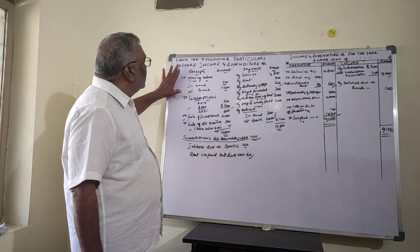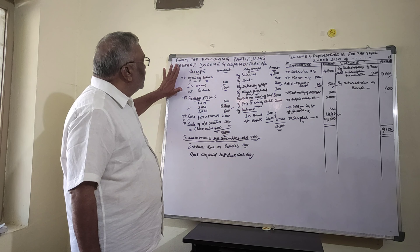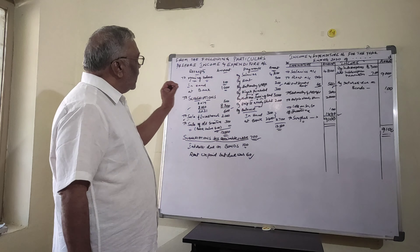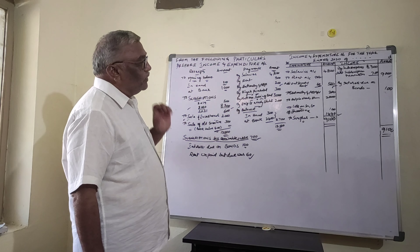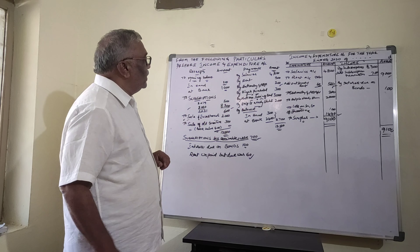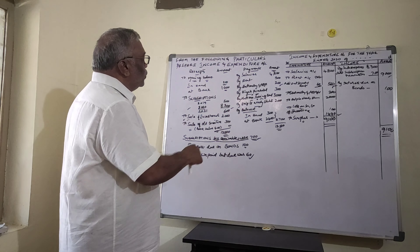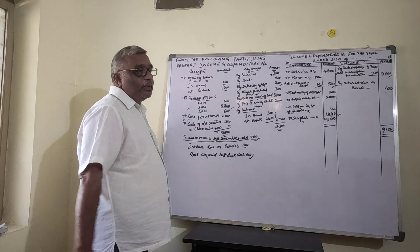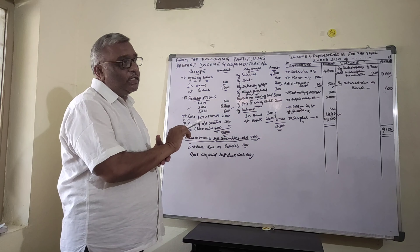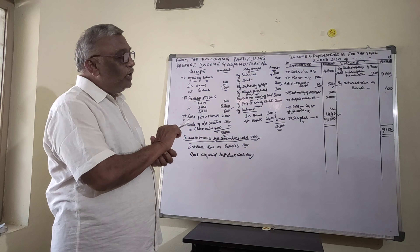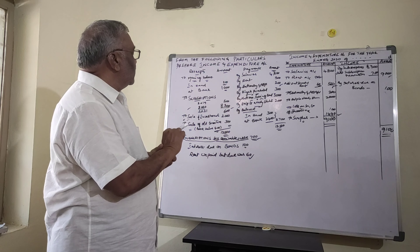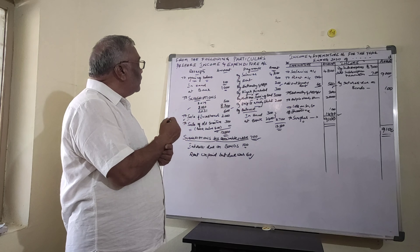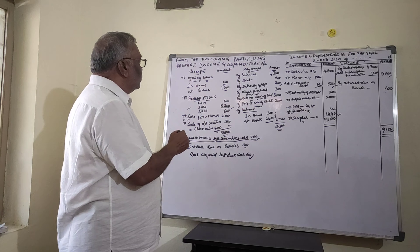At the beginning, cash in hand is $200 and cash at bank is $1,600. These two items are cash items and represent opening assets. We do not need them in the income and expenditure account.